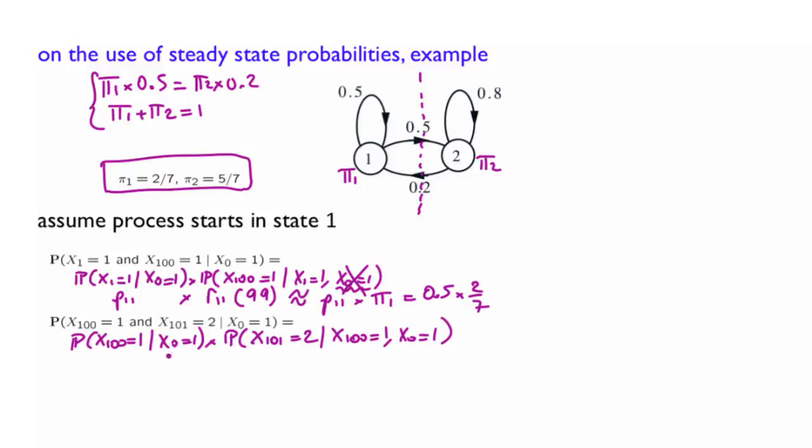x101 equals 2 given x100 equals 1 and x0 equals 1. And again, here, what we have is R11 of 100, and the Markov property tells us that we can forget about this one, and this is the probability transition from 1 to 2, P12. And again, here, if n equals 100 is large enough, we can approximate that by pi1 times P12. And this is then 2 over 7 times 0.5 again.